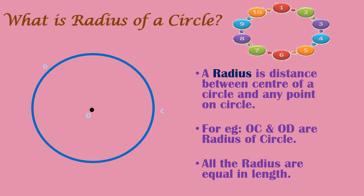What is the radius of a circle? A radius is the distance between the center of a circle and any point on the circle. For example, OC and OD are radii of the circle. All radii are equal in length.